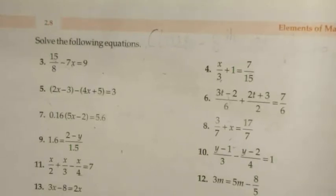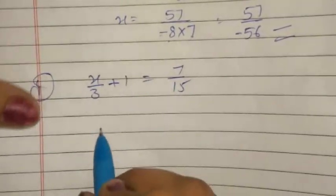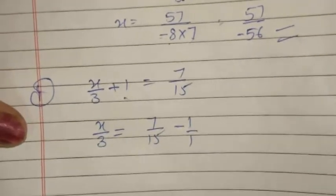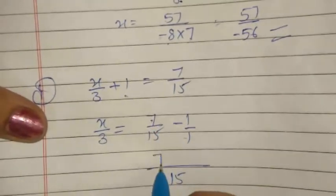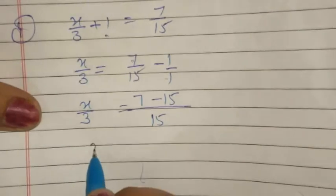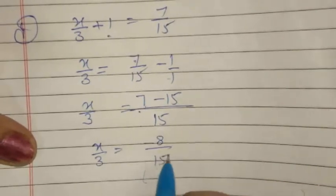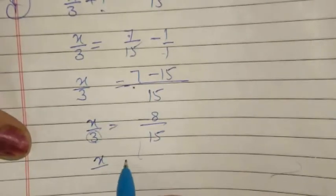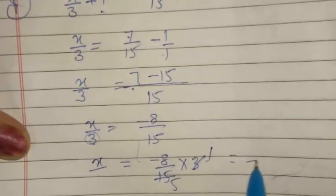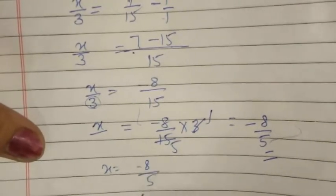Next sum: x/3 + 1 = 7/15. Keep x/3 on the left and transpose 1: x/3 = 7/15 - 1. Taking LCM of 15: x/3 = (7 - 15)/15 = -8/15. Transposing 3 to the right side as multiplication: x = -8/15 × 3 = -8/5.